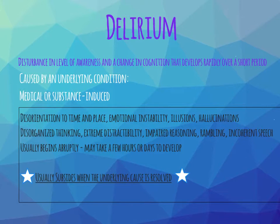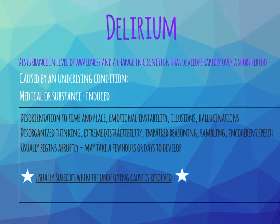The key is that delirium usually subsides if and when the underlying cause is resolved. For people who have a urinary tract infection, we address that underlying cause. If they are in alcohol detox, we address that. If they are in DKA, we stabilize their blood sugar. If they have a fever, we lower the fever. If they're dehydrated, we give them fluids. That's how we handle delirium, and that is how we differentiate the deliriums from the more progressive types of NCD.